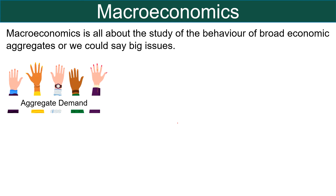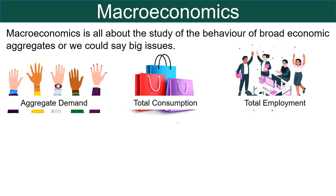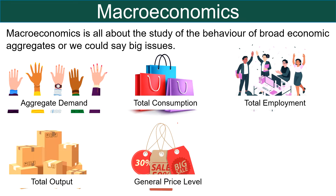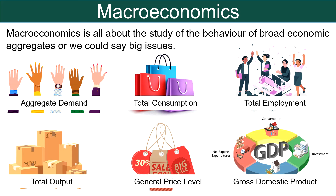These big issues include aggregate demand, total consumption, total employment, total output, general price level, gross domestic product, etc. It explains how the total output of goods and services is determined. Alternatively, it is called aggregative economics. It assumes that the allocation of resources, distribution of output, relative prices, etc. are given.